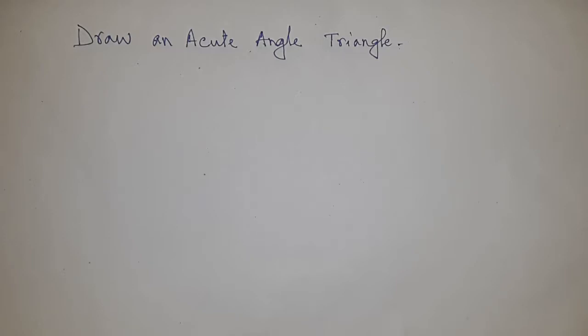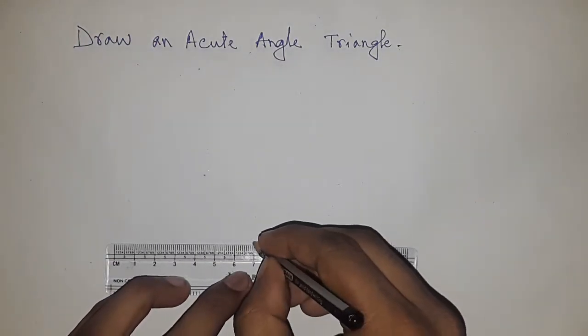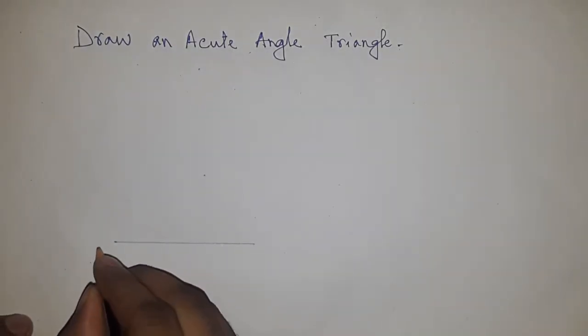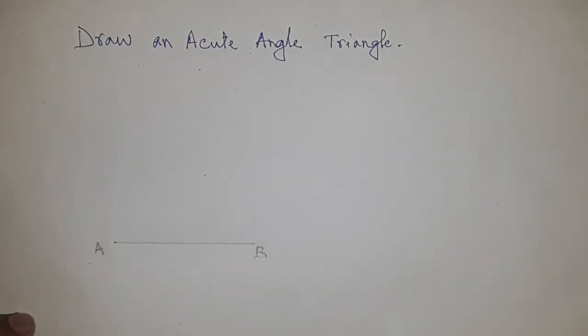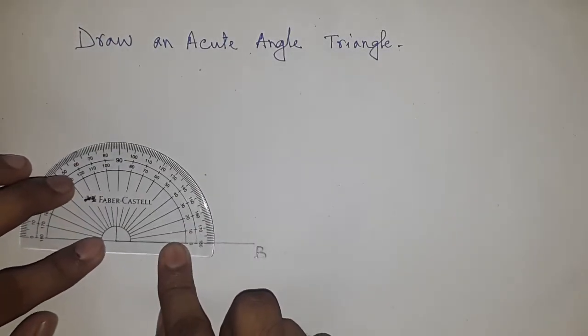Then we can say that it is an acute angle triangle. So let's draw the acute angle triangle. First of all, draw a line of 6 centimeters and label the line AB. Next, draw angle 60 degrees on point A.